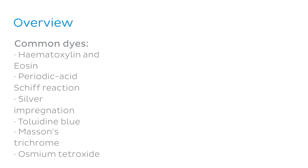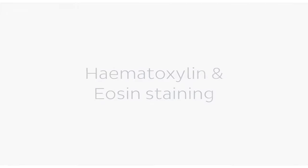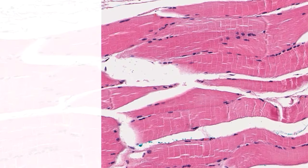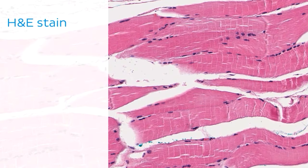The first type of staining that we will look at is hematoxylin and eosin stain, often simply referred to as H&E stain. Here we see a micrograph showing skeletal muscle stained using this technique in order to visualize the tissue under a light microscope.